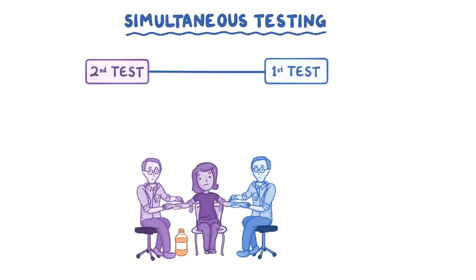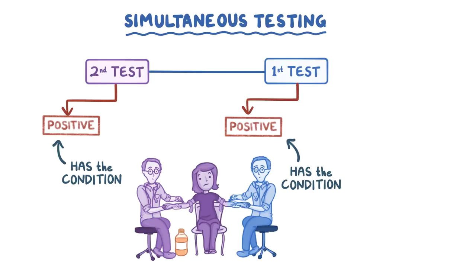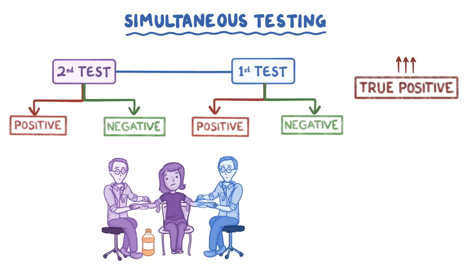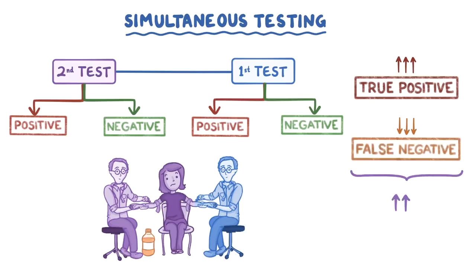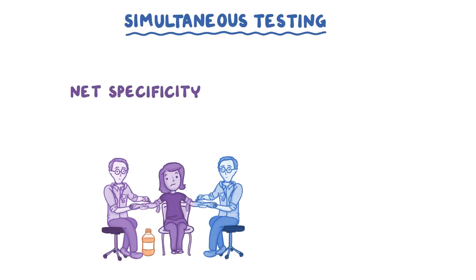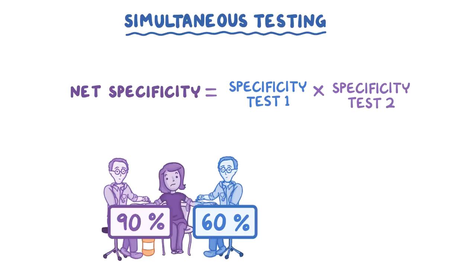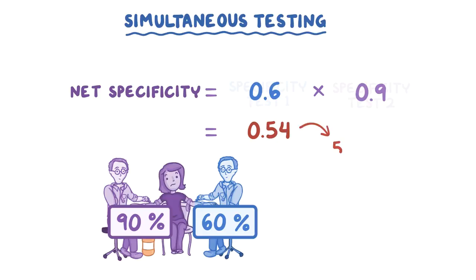In simultaneous testing, the two tests are performed on the same individual at the same time. A person is considered to have the condition if they are positive for either test or both tests, meaning a person is considered not to have the condition only if they are negative for both tests. This leads to an increase in true positives and a decrease in false negatives, which increases the net sensitivity. The net specificity for simultaneous testing is calculated by multiplying the specificity of the first test by the specificity of the second test. For example, if the first test's specificity is 60% and the second is 90%, the net specificity is 0.6 × 0.9 = 0.54, or 54%.